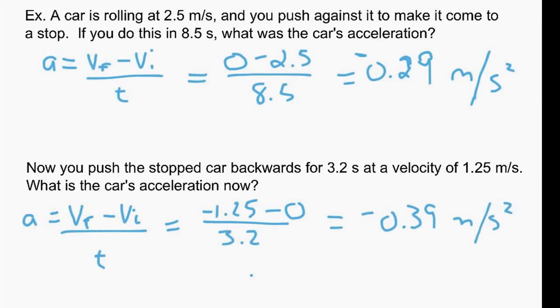So these two examples are very similar, but they're different in the key idea of direction and whether it's going to be positive or negative. So the first one, the car is going forward. We're slowing it down. We're bringing it to a stop. So we'd have negative acceleration. The second one, we're going from 0 to 1.25, so it's speeding up, but we're going backwards. So that one's also considered negative.